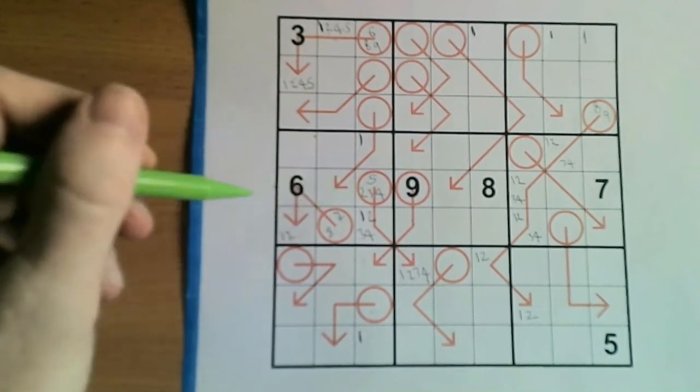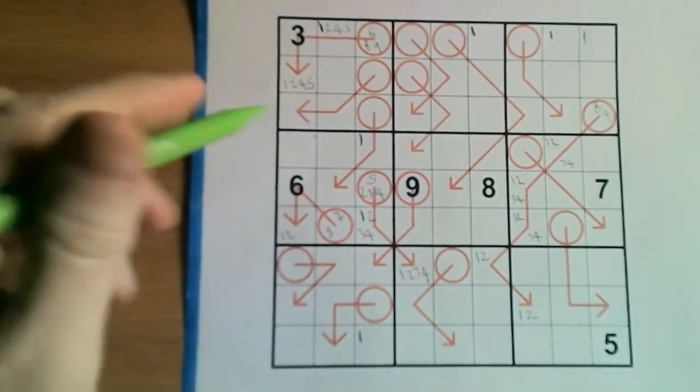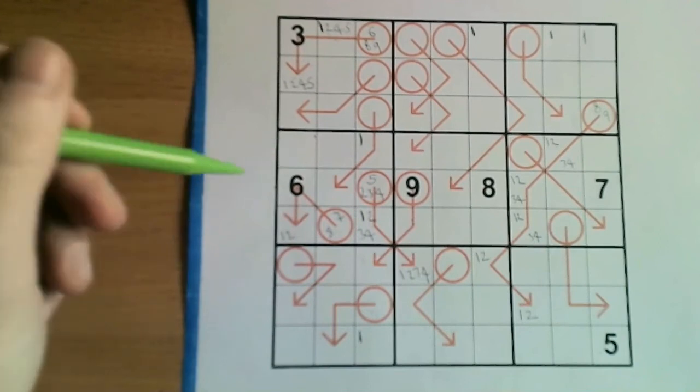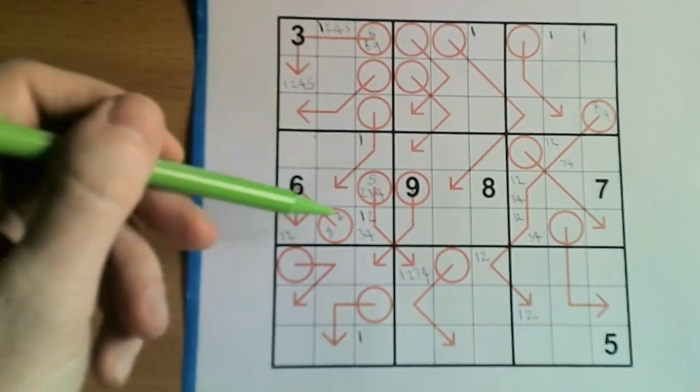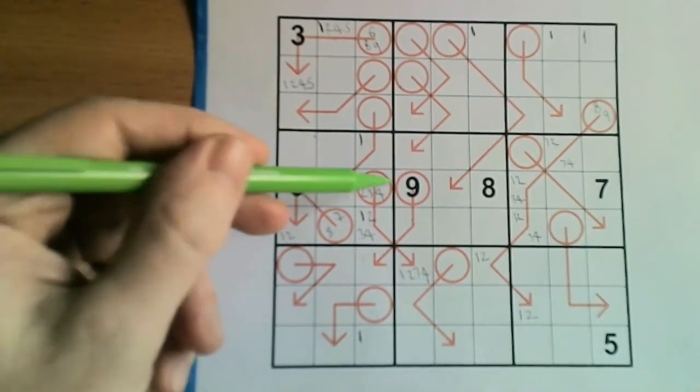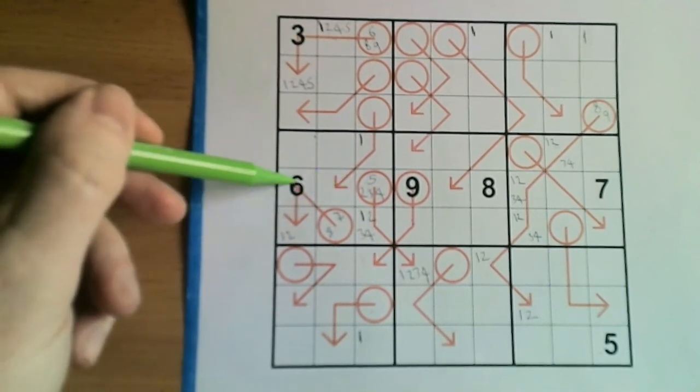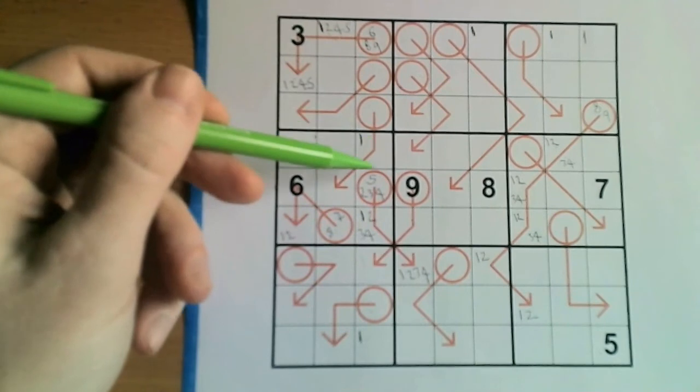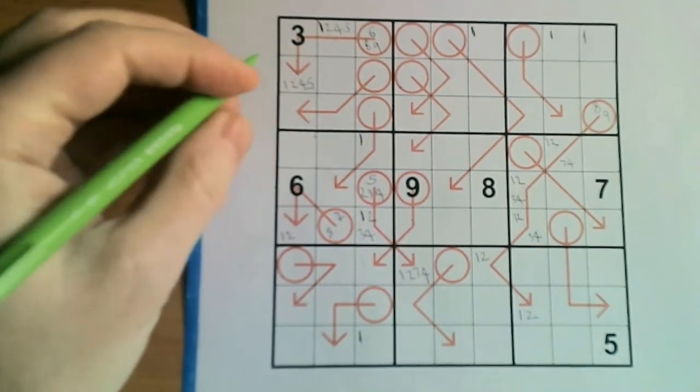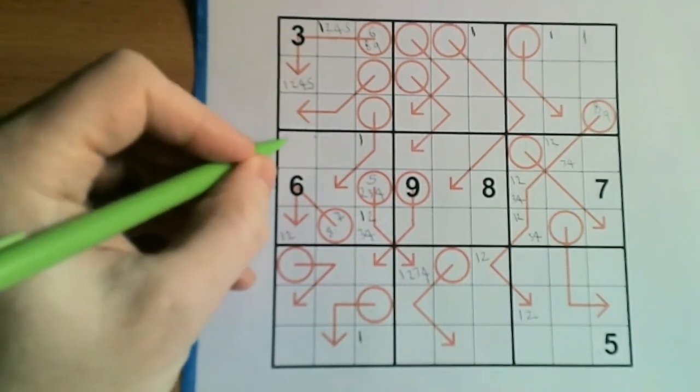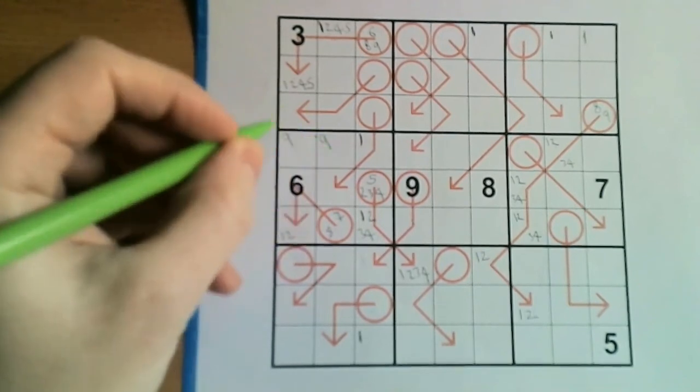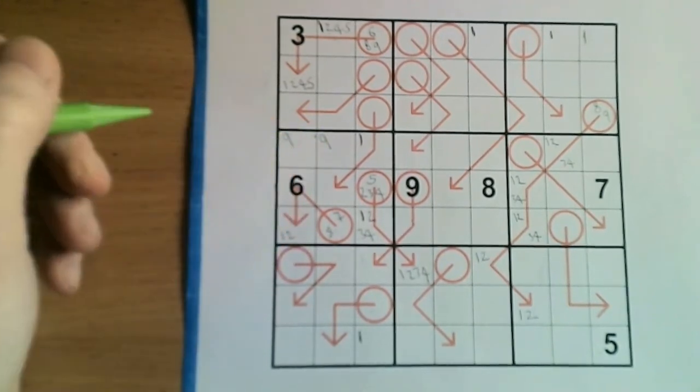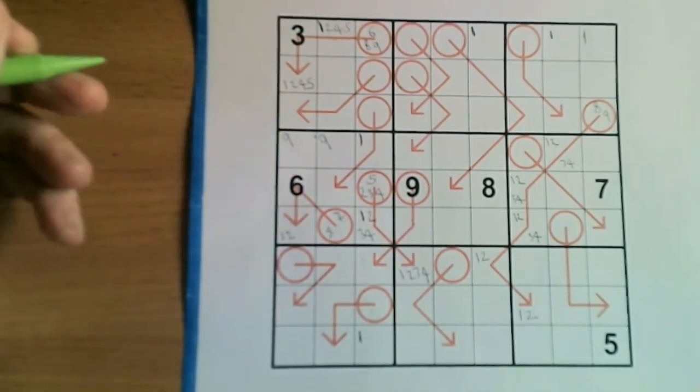And we can see now we've done this pencil marking that we can reduce the options for the 9 in this box. And interestingly the 9 doesn't actually go in either of these 2 squares as you can see. It can't go here, here, or here. It can't go here, here, or here. It can't go here because that's along the body of an arrow. So in fact our 9 must go in one of these 2 squares in this box. And you can see we're starting to make good progress now.